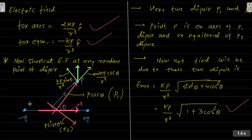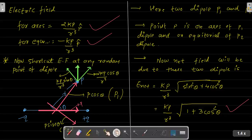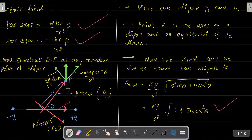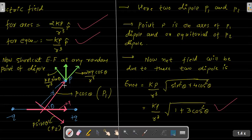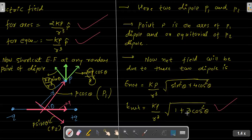So we have two individual dipoles P1 and P2. Since the electric field is a vector, we take the vector sum. kP/r³ is a common factor. Under the root we get sin²θ + 4cos²θ, which simplifies to 1 + 3cos²θ. So the net electric field at a random point is E = (kP/r³)√(1 + 3cos²θ). If you can't remember the axial and equatorial formulas separately, remember this general formula.